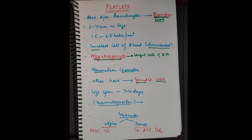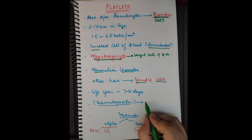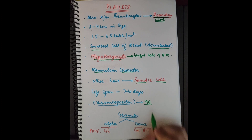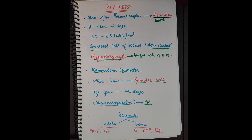The lifespan of platelets is seven to ten days. Thrombopoietin is a molecule which helps in the process of thrombopoiesis — the formation of thrombocytes. The thrombocytes come from the megakaryocyte, and thrombopoietin acts on the bone marrow to produce the platelets, just like erythropoietin works for RBCs.